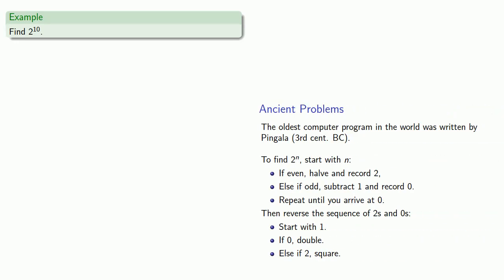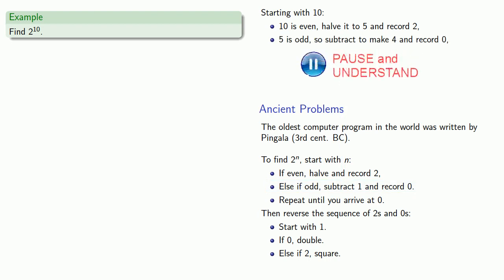For example, suppose we want to find 2 to power 10. So we'll initialize with our starting value of 10. 10 is even, so we're going to halve it to 5 and record 2. 5 is odd, so we'll subtract 1 to make 4 and record 0.